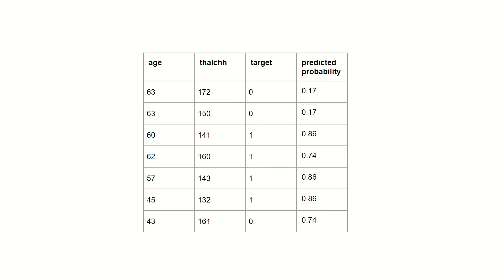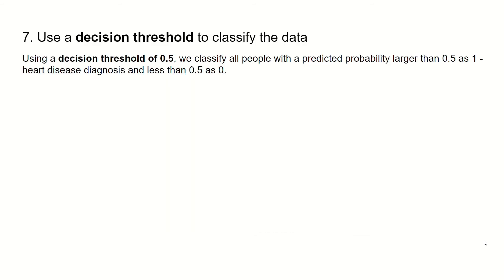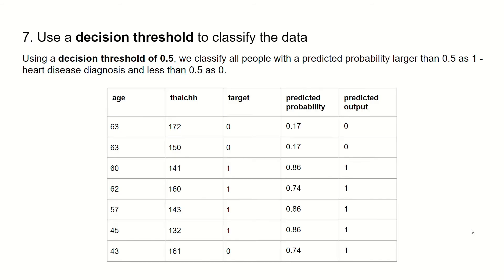So now we need to convert these predicted probabilities into an actual classification. For that, we can use a decision threshold. If we were to use a decision threshold of 0.5, we classify all people with a predicted probability larger than 0.5 as 1, that is heart disease diagnosis, and less than 0.5 as 0, no heart disease diagnosis. Applying this logic to our predicted probabilities, we're predicting 0 for the first two entries since their predicted probabilities are less than 0.5, predicting 1s for certain entries, and in the last case, since the predicted probability is larger than 0.5, we predict 1 — but this is actually incorrect, since the target value is 0. So after just building two decision trees, we got very close to predicting all of the entries in this small dataset.